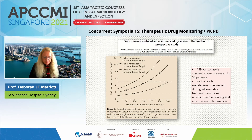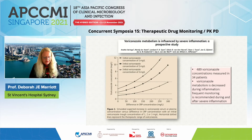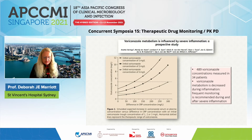The same group then conducted a prospective study of 489 voriconazole concentrations in 34 patients, clearly showing that voriconazole metabolism is decreased during inflammation and recommending frequent monitoring during and after severe inflammation. To illustrate the impact: if your baseline concentration is 3 — well within the therapeutic range — by the time CRP reaches 100 you are entering the toxic range. If your baseline is 1, it takes a CRP of 300 to reach that toxic range.